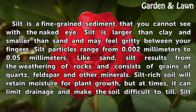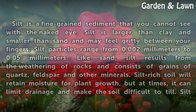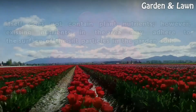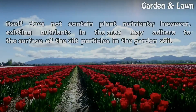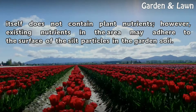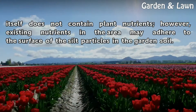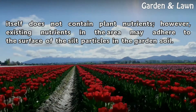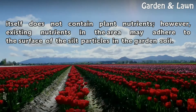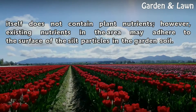Silt-rich soil will retain moisture for plant growth, but at times it can limit drainage and make the soil difficult to till. Silt itself does not contain plant nutrients; however, existing nutrients in the area may adhere to the surface of the silt particles in the garden soil.